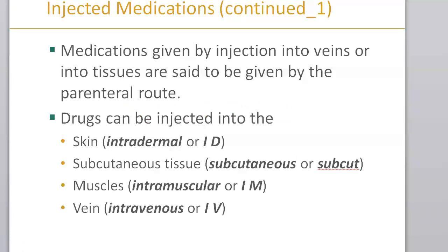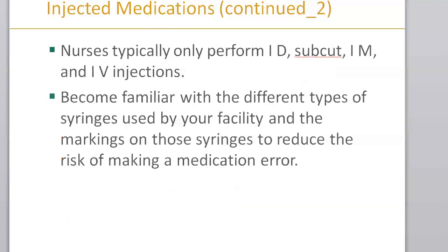Medications given by injection into veins or into tissues are said to be given by the parenteral route. Drugs can be injected into the skin — intradermal (ID) — subcutaneous tissues, or muscles — intramuscular (IM). We're not going to cover intravenous (IV) for now; we're more concerned with the first three because those are what you will do with your first skills checkoff. Nurses typically perform ID, subcutaneous, IM, and IV injections, so become familiar with the different types of syringes used by your facility and the markings on those syringes to reduce the risk of making an error.